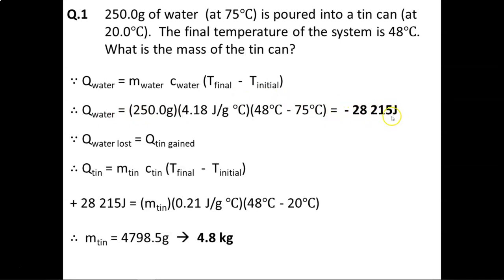Because energy cannot be created or destroyed, the energy lost by the water doesn't just magically disappear, it must be gained by someone else, and in this case, it is gained by the tin. Please note that q water lost is a negative value because the water lost the energy, while q tin gained is going to be a positive value because it was gained by the tin.